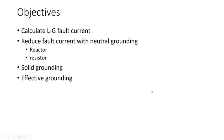The objectives of this video series: we'll learn how to calculate the line-to-ground fault current, reduce the fault current with neutral grounding — starting with a reactor, then a resistor, then solid grounding. We'll verify each case because each time you add a reactor or resistor you're adding impedance, and you may not maintain effective grounding of the system, which is very important.